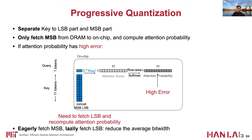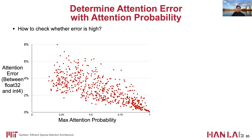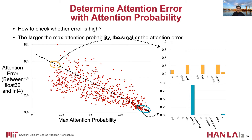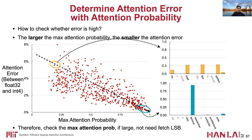The cost is that sometimes we need to recompute attention. The question is: how can we check whether the attention error is high or not? In this plot, each red dot is an input sentence. We find that the larger the max attention probability, the smaller the attention error. For example, a point with a flat attention probability distribution has a small max value and large error. On the contrary, a point with a dominating attention probability has a very large max value, so the attention error is small. Therefore, during computation, we check whether the maximum attention probability is larger than a threshold — if so, we don't need to fetch LSBs.